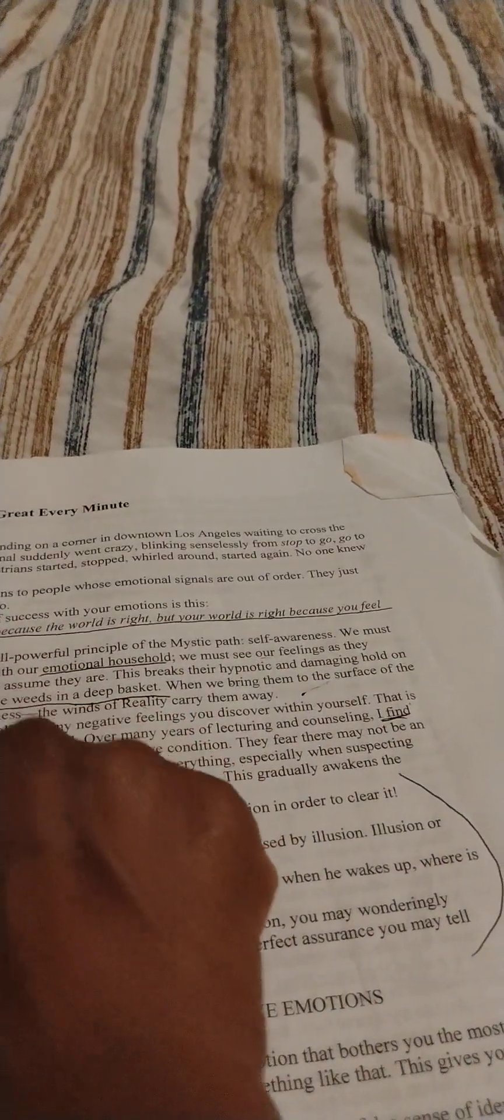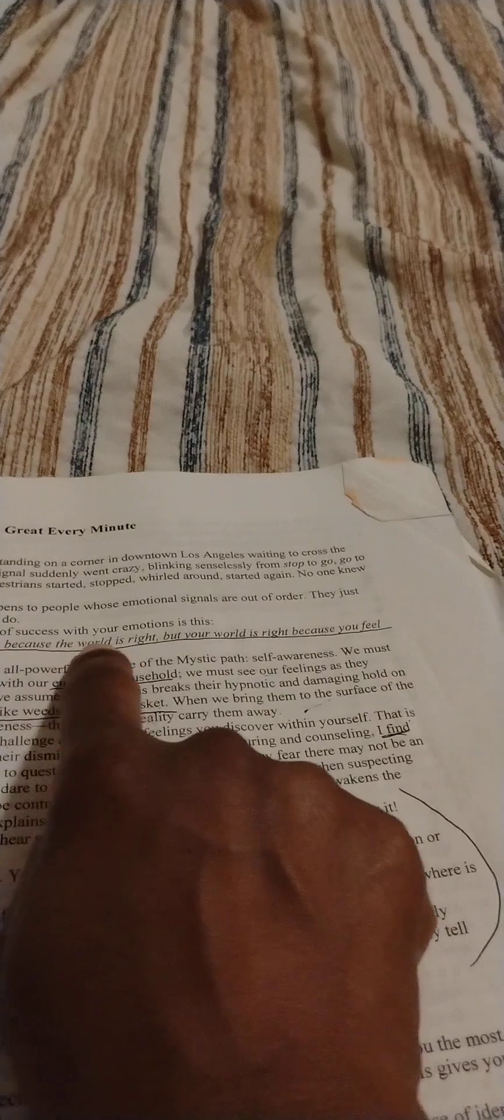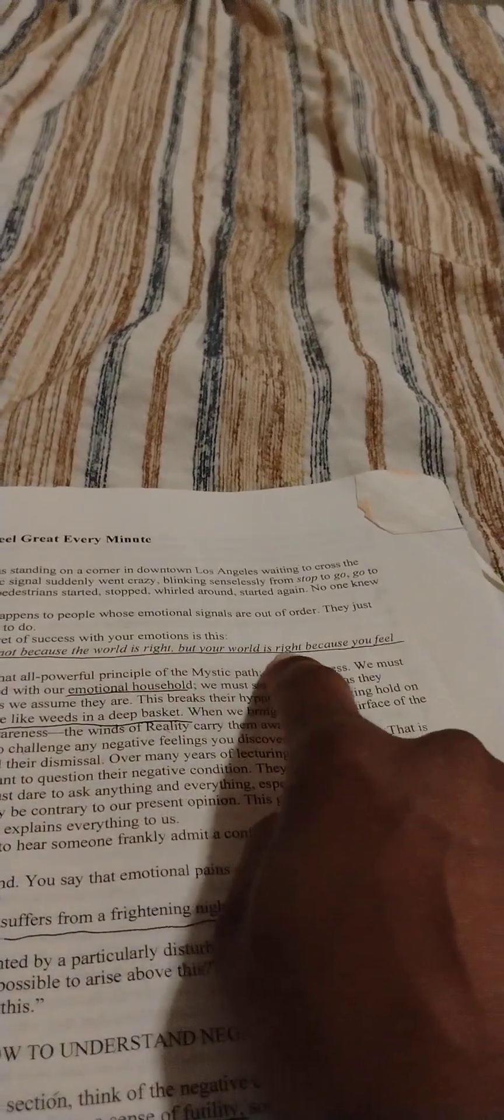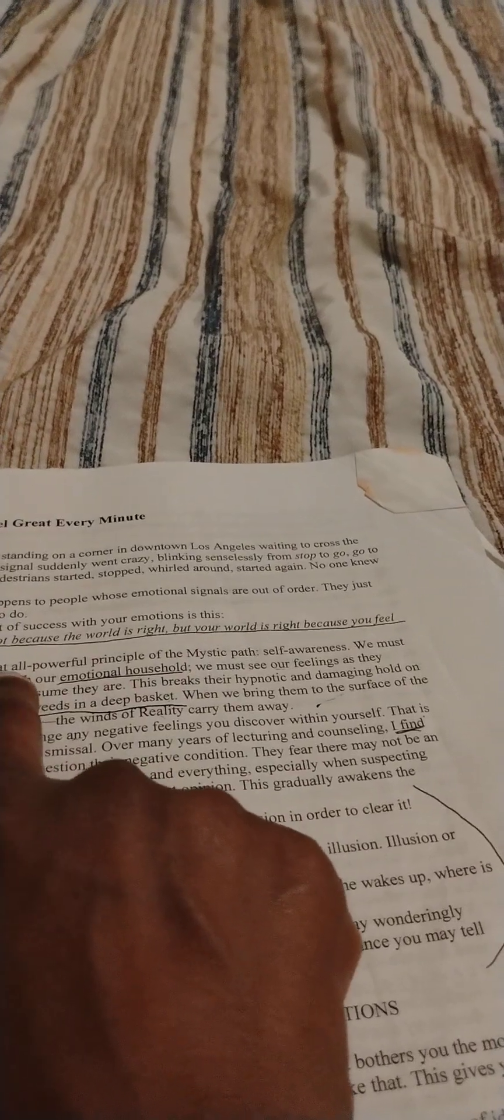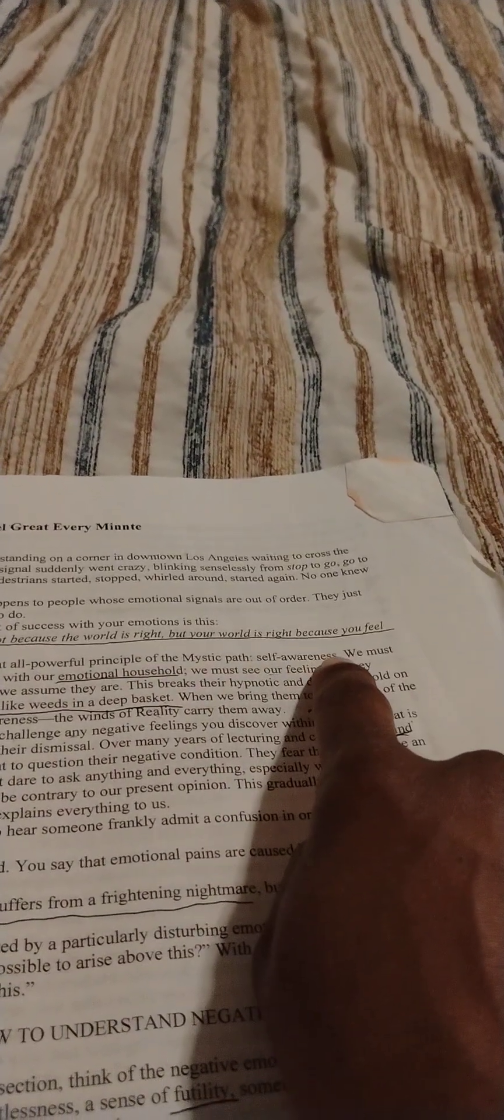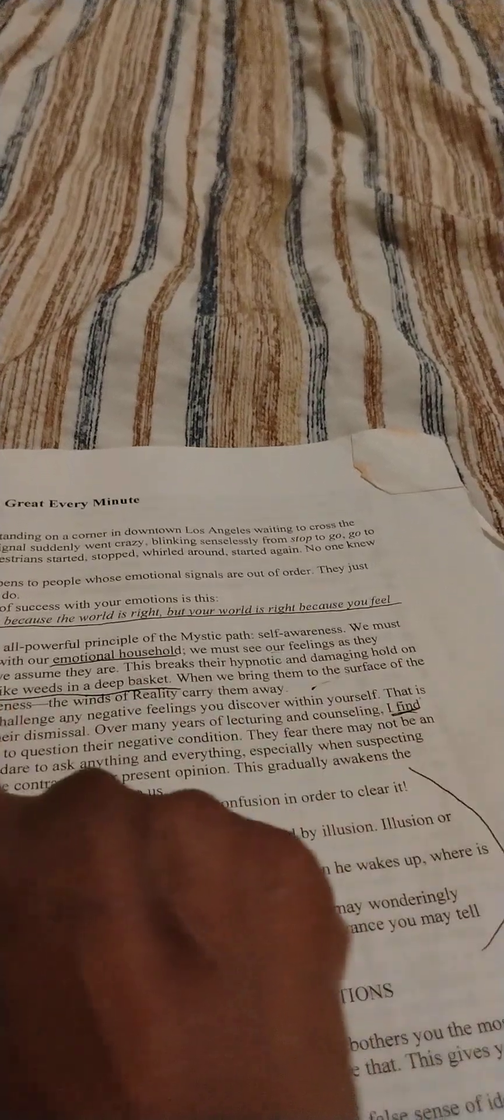The entire secret of success with your emotions is this: you feel good not because the world is right, but your world is right because you feel good. We start with the all-powerful principle of the mystic path: self-awareness. We must become acquainted with our emotional household. We must see our feelings as they actually are, not as we assume they are.